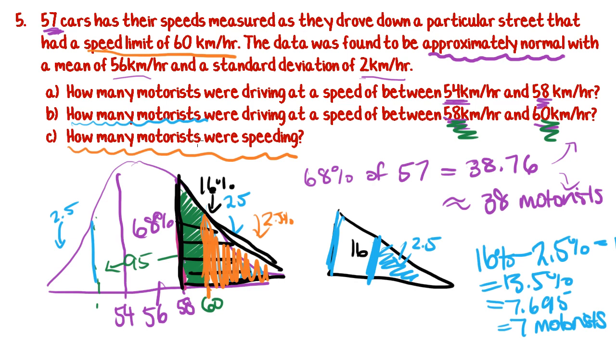So how many motorists were speeding? The answer is not 2.5 percent, it's 2.5 percent of this 57. So we say 2.5 percent of 57 and we get 1.425. Now in this case, because you can't have 0.7 of a person, we are going to round it down. And the answer is there was one motorist speeding. That's how you work out that question.